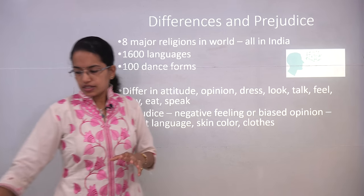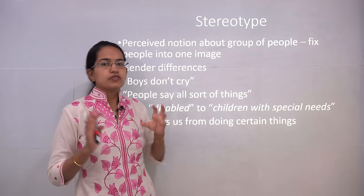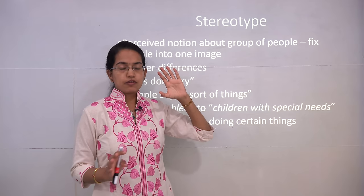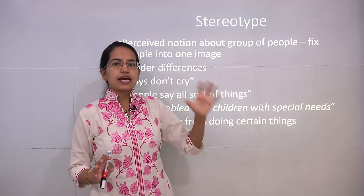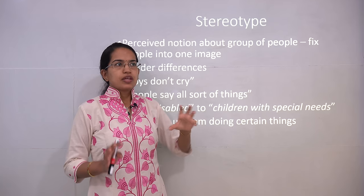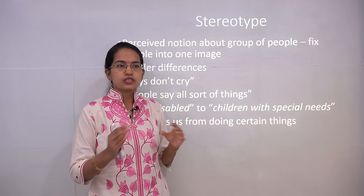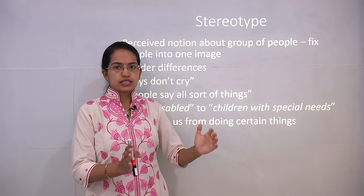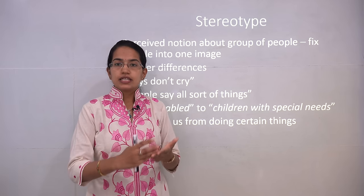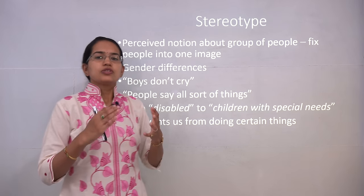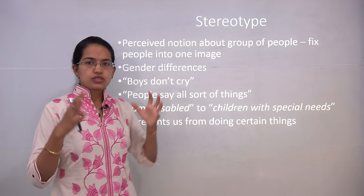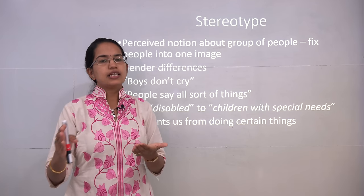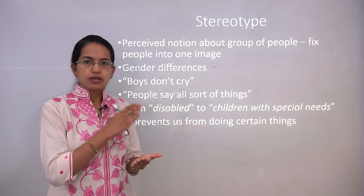The other phenomenon we are studying is stereotype. A stereotype is a preconceived notion about something — a kind of fixed image you have in your mind. For example, you associate various gender differences; boys are not associated with crying. So if a boy is seen crying, he might be teased or laughed at. These are the things that occur under stereotype. It is a preconceived notion, not necessarily related to a negative feeling as in the case of prejudice.